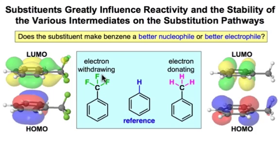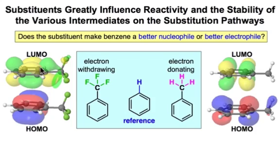An electron withdrawing group is going to have its greatest effect on the LUMO and make the π system more electrophilic. You can see from the LUMO of this trifluoromethyl group that it's the σ* orbital that's interacting in a π to σ* π-type interaction that depletes the electron density from the benzene ring, making it a better electrophile.